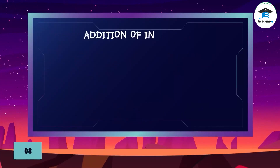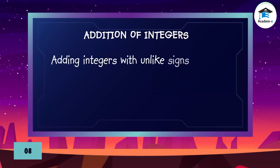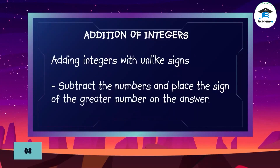Addition of integers — adding integers with unlike signs: subtract the numbers and place the sign of the greater number on the answer.